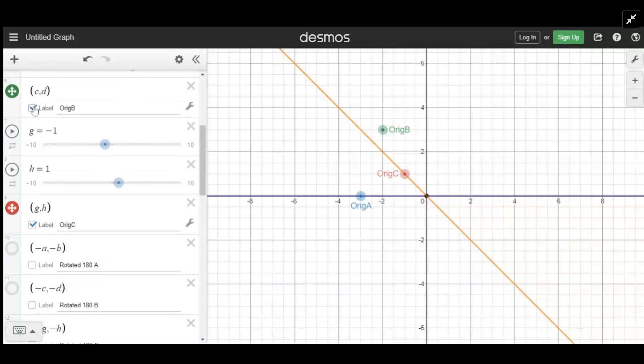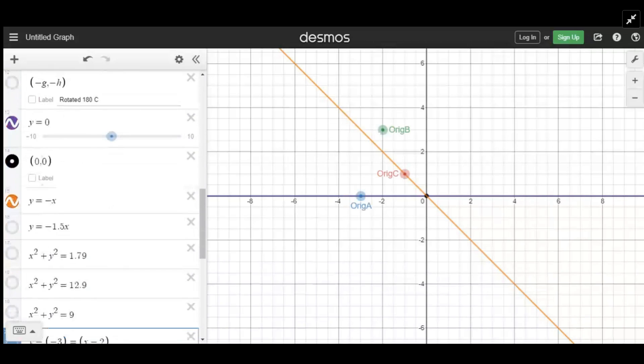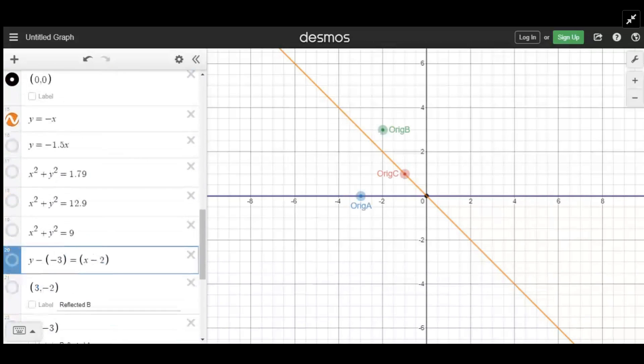When you rotate something 180 degrees about the origin, it's as if you drew a circle with the center at the origin going through that point. So let's start with C. If I draw a circle that goes through point C,